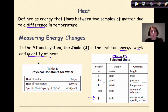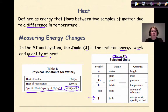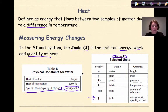Another table I want to point out that we'll be using later in this tutorial is Table B, where we will be identifying the specific heat capacity of water as a liquid as 4.18 joules per gram Kelvin, or degrees Celsius — pretty interchangeable. I just wanted you to be aware that those two tables exist and are there to help you.